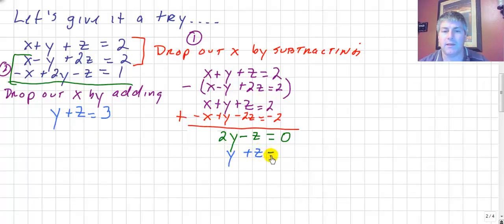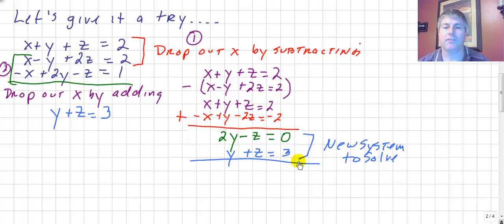y plus z equals three. This becomes our new system to solve, and that will give us two of our three variables. That's pretty straightforward. I've got equal and opposite coefficients on the z's. Let's go ahead and just add those together. We get 3y equals three, so we know y equals one.